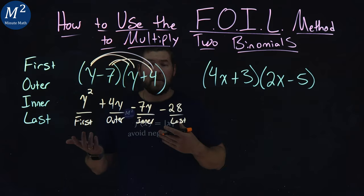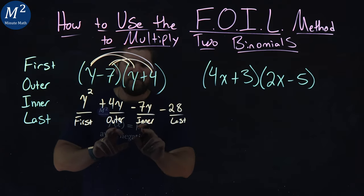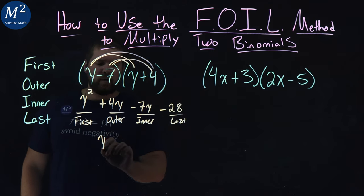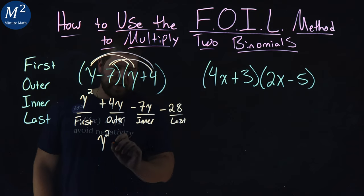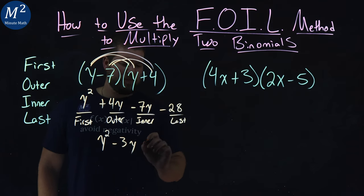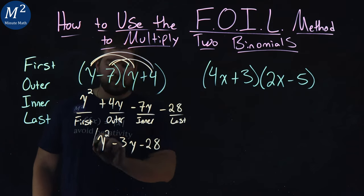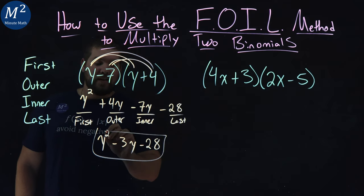From there, we want to simplify by combining our like terms. It will generally just be, most of the time, the two middle ones, the outer and inner. So y squared just comes down and 4y minus 7y is minus 3y and then minus 28 at the end. Now we simplified our first binomial.